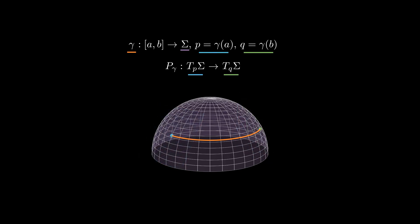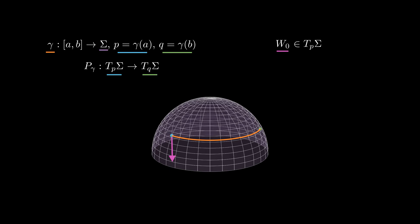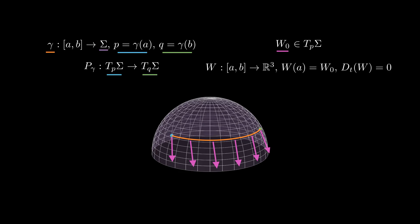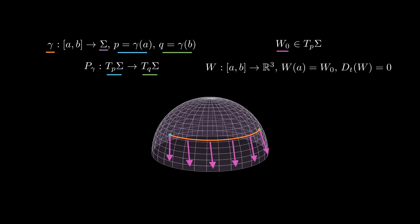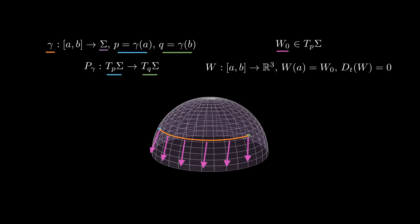It is defined as follows: let p and q be the initial and final points of gamma, and take a vector w0 in TpSigma. We would like to construct a vector field w along gamma that starts at w0 and whose covariant derivative along gamma is 0. We then define P_gamma of w0 to be w evaluated at the final time.